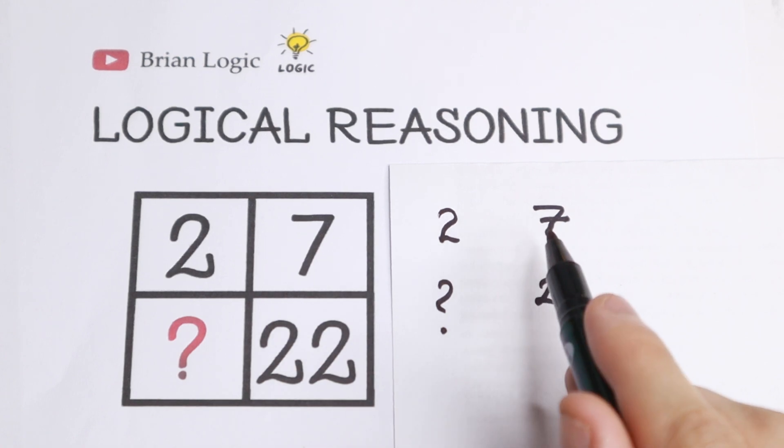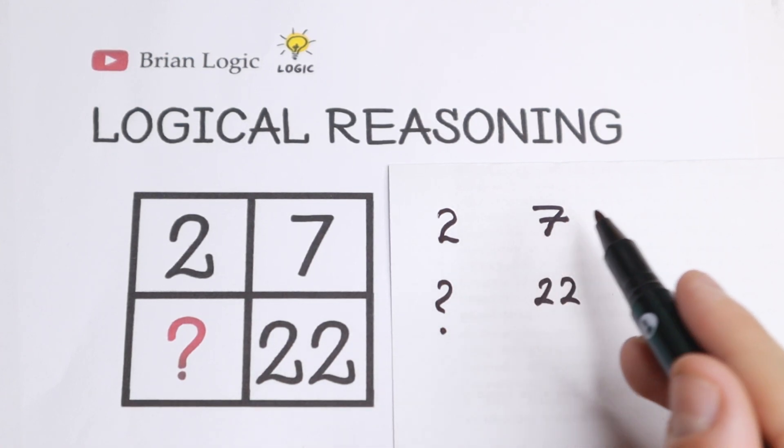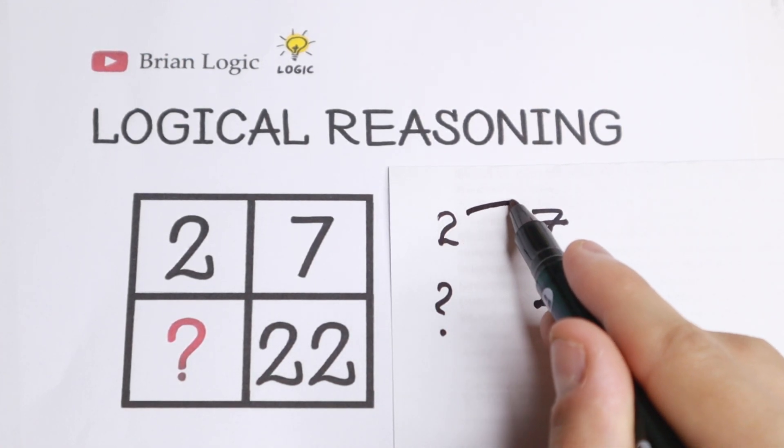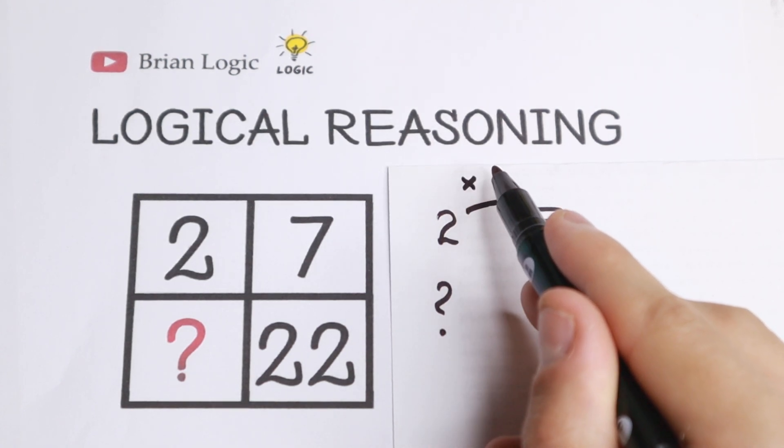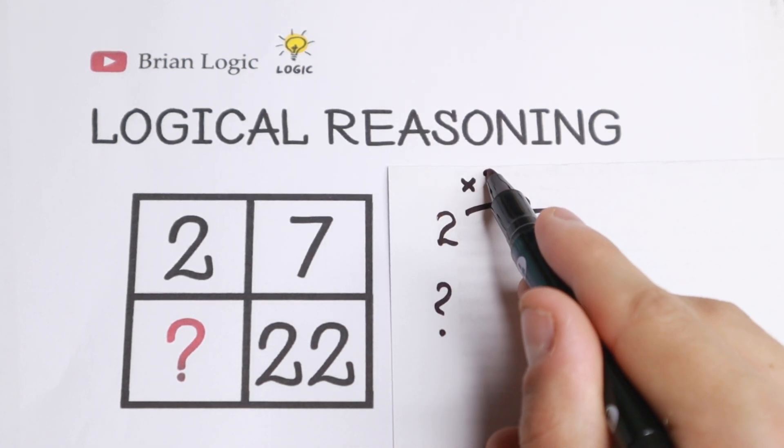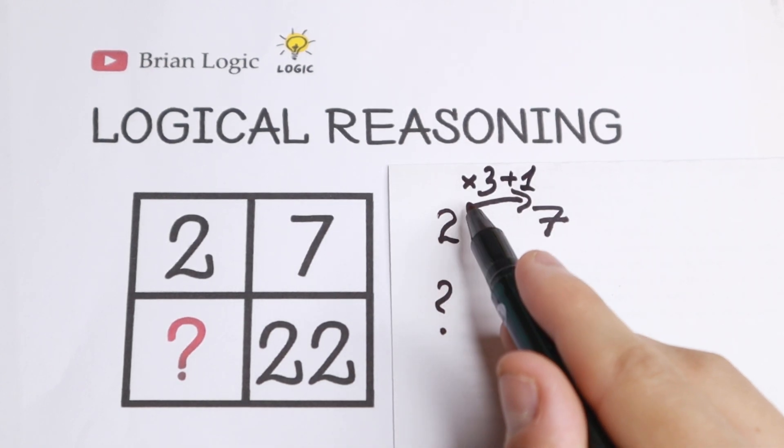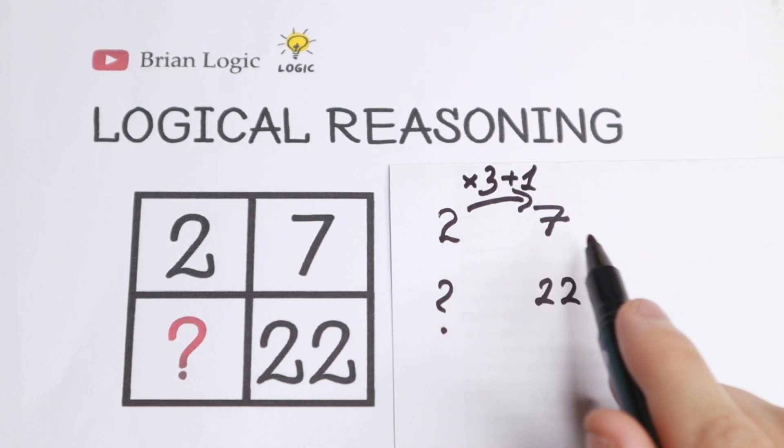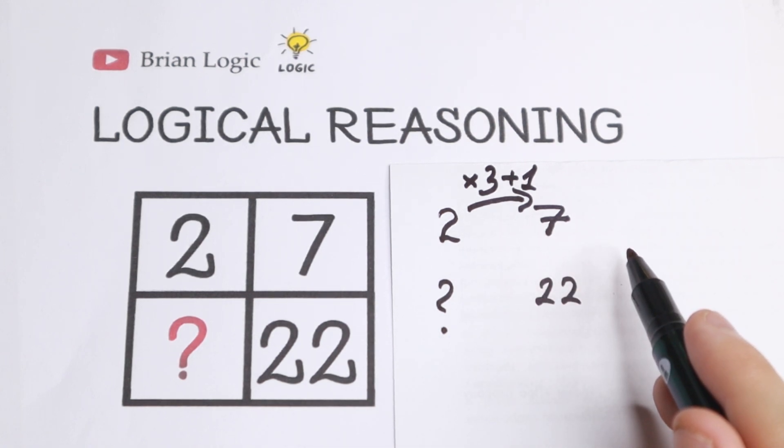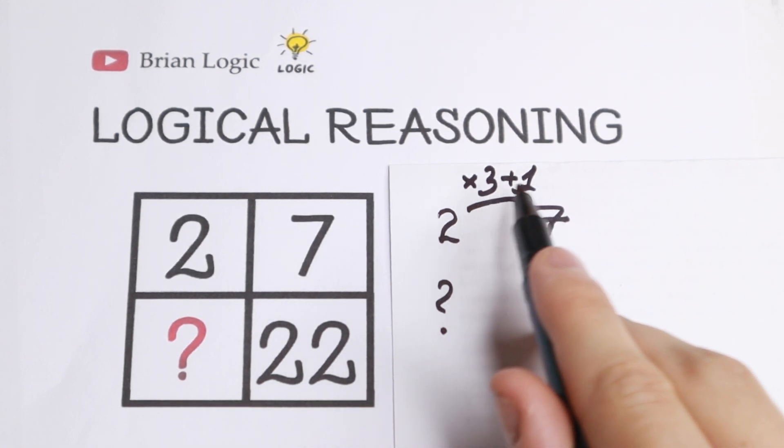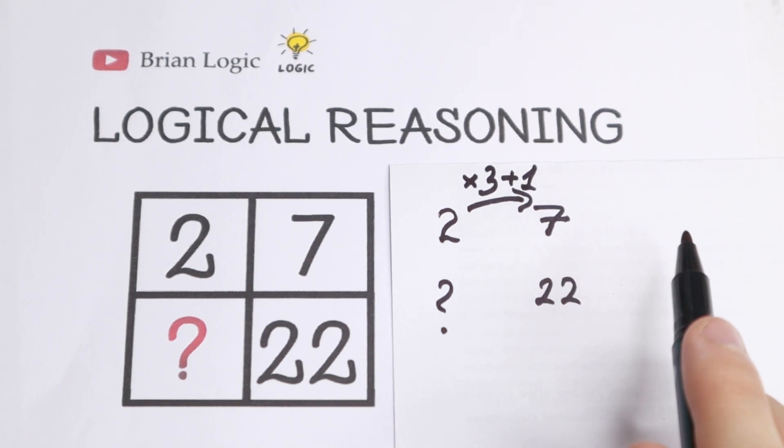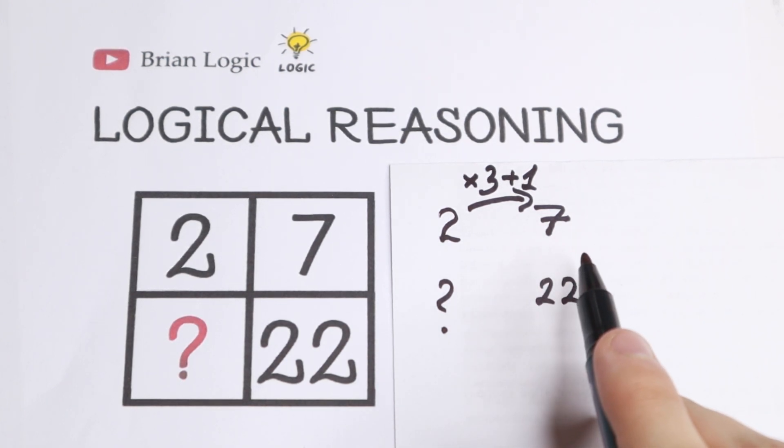Let's start with 2 and 7. What we need to do with this 2 to get this 7? So of course if we multiply these 2 by 3 and add 1, what we'll have? We'll have 2 times 3, we'll have 6. 6 plus 1, we will have 7. So as you can see if we multiply this number by 3 and add 1, we'll have 7. So there looks like a pattern between first two numbers.